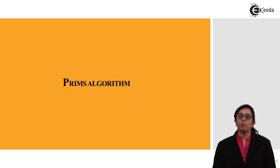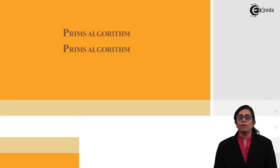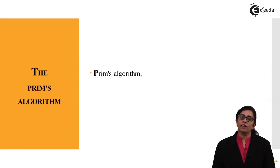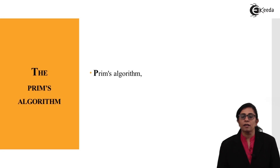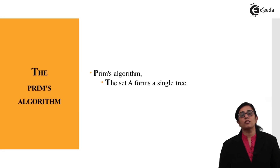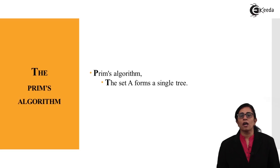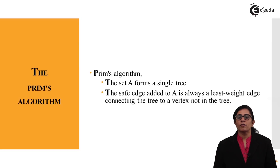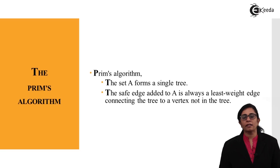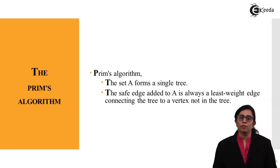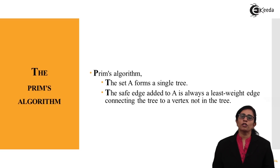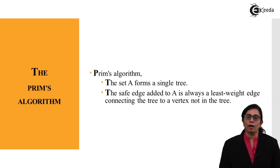Prim's algorithm works on graphs which are not directed. They form a single tree, and from that single tree a safe edge is always added with the least weight, connecting a tree to the vertex which is part of the complete tree. So from a source to a destination, we find out the shortest path first — that is, the weight which is less on the nodes is added up as we travel from source to destination.